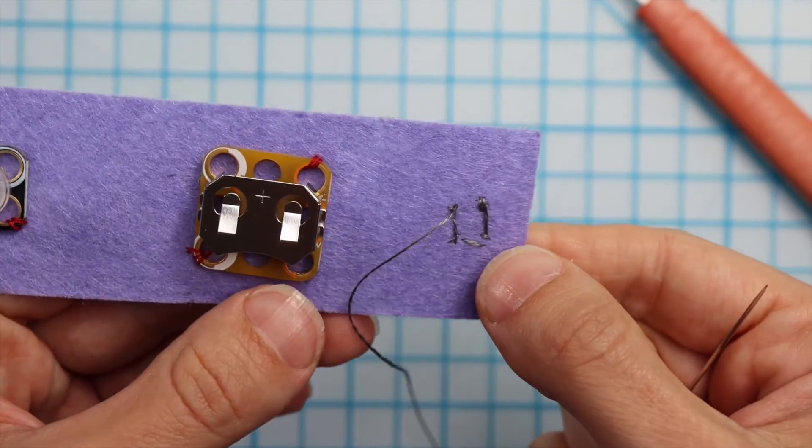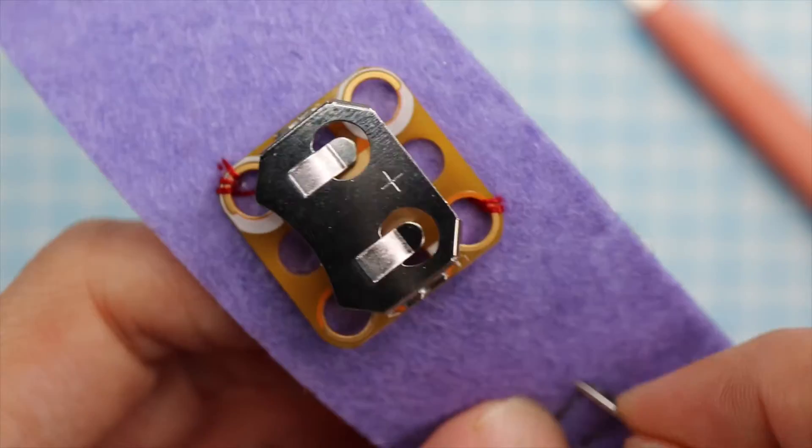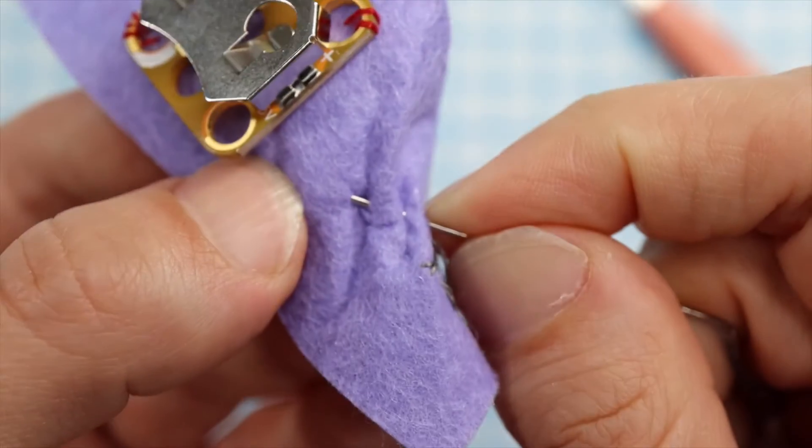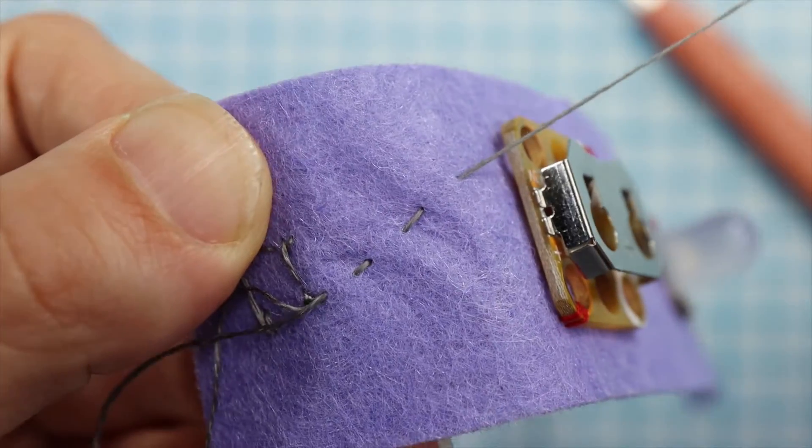Use conductive thread single ply, making a running stitch by going in and out of the fabric to the next component. You can make multiple stitches at once by inserting the needle up and down like this.